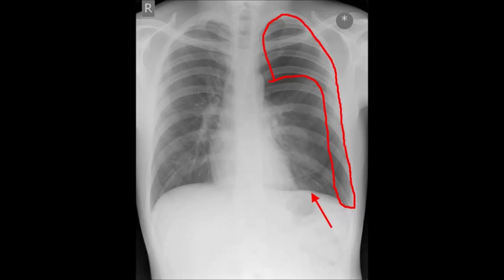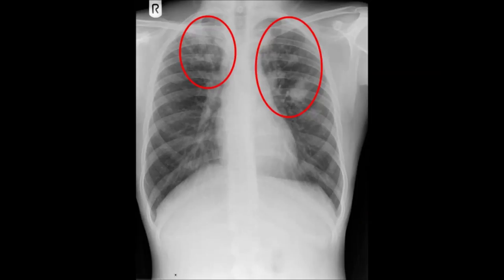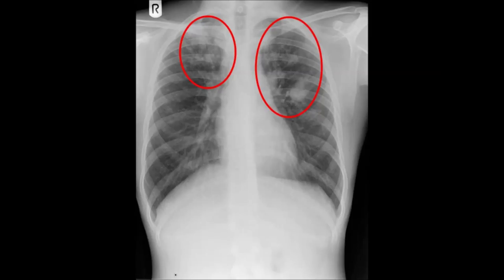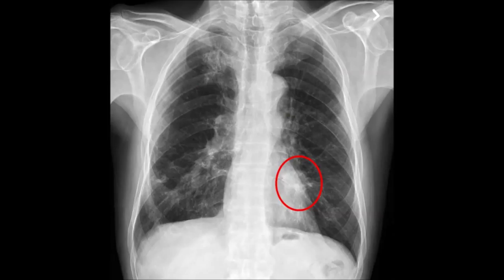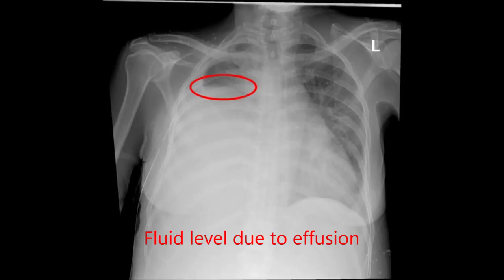Also notice that the left hemidiaphragm is flattened compared to the right. Also look at the lung fields for any areas of abnormal shadowing, such as in this patient with tuberculosis. Any opaque masses, such as in this patient with lung cancer. And for any fluid levels, such as in this patient with pleural effusion. Remember that you only see fluid levels in patients who are upright.